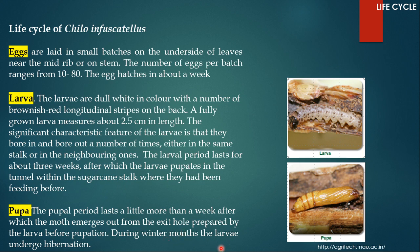During winter months, the larvae undergo hibernation. They hibernate at the beginning of winter inside the stems and remain inactive throughout the winter. After winter, they will pupate, and after pupation, they will emerge as adults.